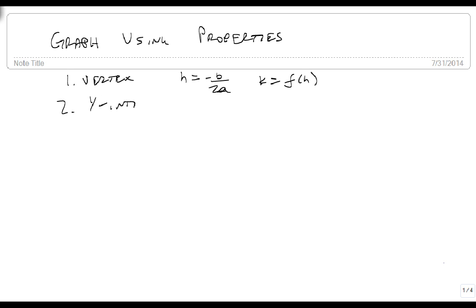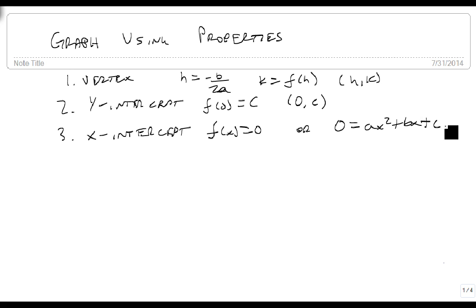Then the y-intercept, which is found by plugging in f of 0, which will always be that constant at the end c because the x's will go away. So it's always at point (0, c) and this is always at point (h, k). And then the x-intercepts, which you won't always find nor will they always be easy to find. But this is when we take f of x and set it equal to 0, or solve the equation 0 equals ax squared plus bx plus c.